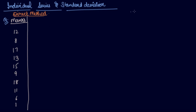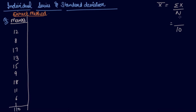First, we have to calculate the mean in the direct method. We calculate the mean as summation of x divided by n. The number of observations are 10, and if we add all the items, we get 110. So the summation is 110, giving us a mean of 11.